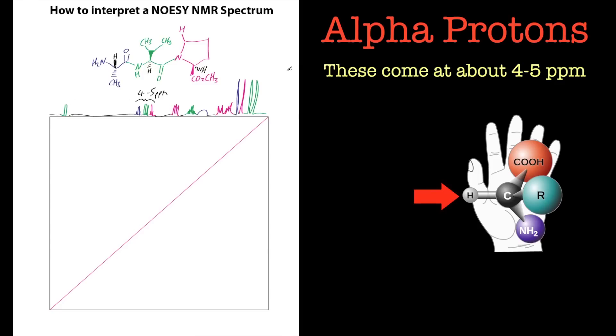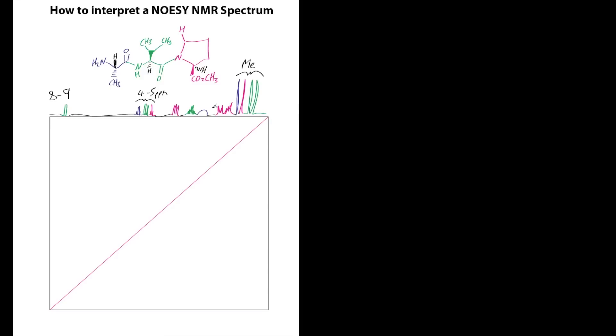Another one to identify would be this NH proton, this amide proton. They come between 8 and 9 ppm, so they're really easy to spot. Also, we've got some methyl protons here. Let's call them ME. They come between 1 and 2 ppm, so they're easy to spot.